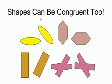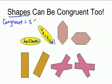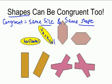Now, shapes can be congruent too. You can see our yellow circle is congruent. It doesn't matter if one is horizontal and one is vertical. It doesn't matter as long as they're the same size and the same shape. For shapes, congruent equals same size and same shape. They have to be the same shape and the same size. Looking at our ovals, they are the same shape and the same size. Looking at this next shape, it is the same shape and size. These lines are congruent — they're all the same length.